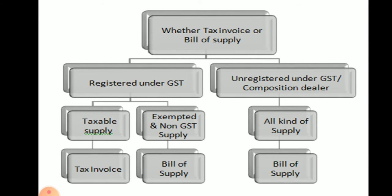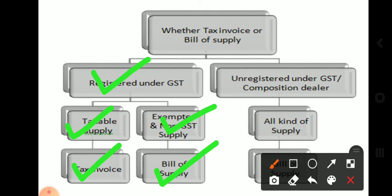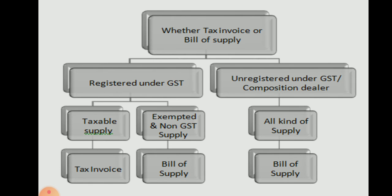Next, we look at how to differentiate whether a Tax Invoice or Bill of Supply is to be used. This is clear from the diagram shown. If registered under GST and it is a taxable supply, then a Tax Invoice is to be issued. If it is an exempted or non-GST supply, then a Bill of Supply will be used. For those unregistered under GST or composition dealers, for all kinds of supply, a Bill of Supply will be used. This is all about Bill of Supply and HSN Code under GST.